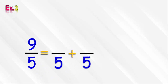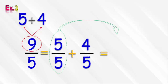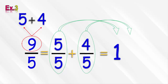Then we write the numerator 9 in the form of 5 plus 4. Then we write 5 in the numerator of the first fraction and 4 in the numerator of the second fraction. Then we put the first fraction 5 over 5 in the form of the whole number 1, and put the fraction 4 over 5 beside the whole number. So the mixed number is 1 and 4 over 5.